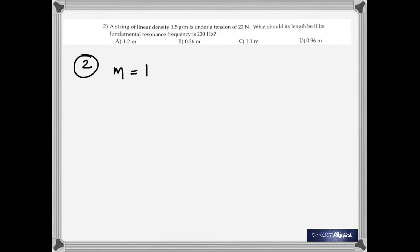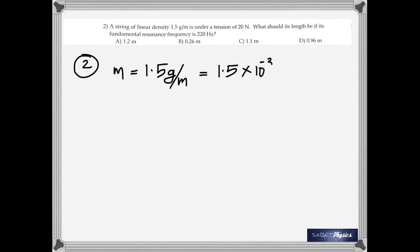The second question: a string of linear density 1.5 grams per meter is under a tension of 20 newtons. What should its length be if its fundamental resonant frequency is 220 Hertz? Linear density is the mass of one meter — it's in grams, so you have to change it into kilograms.